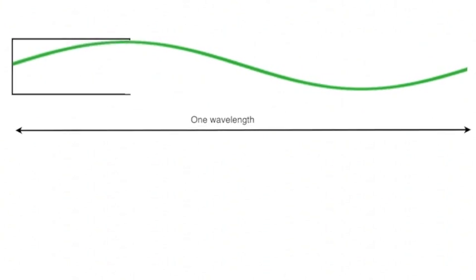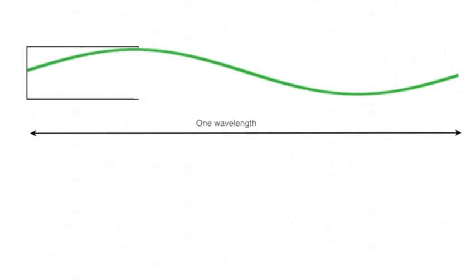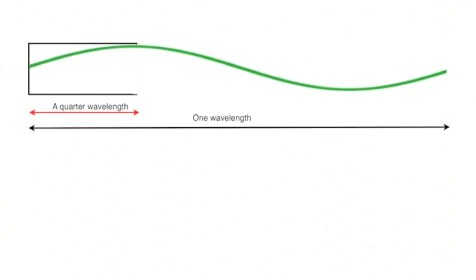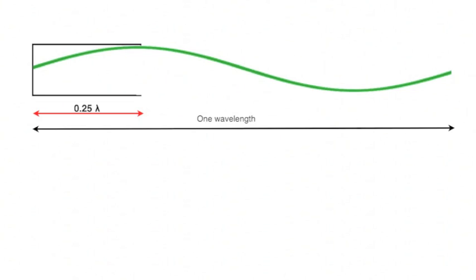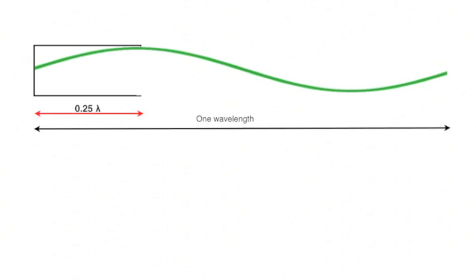then from this extended diagram, we can see that the original part of the tube is equal to a quarter wavelength. If we measure this and use that in conjunction with the frequency of the fork, which we've also measured, then we can use that to calculate the speed of sound in air.